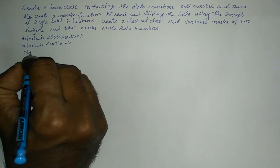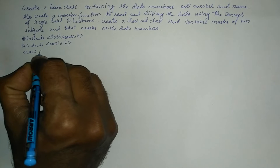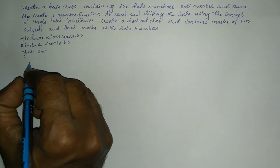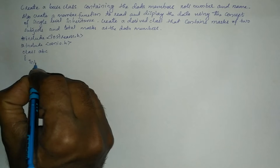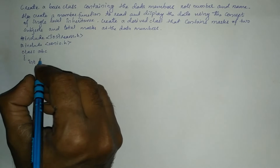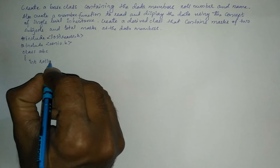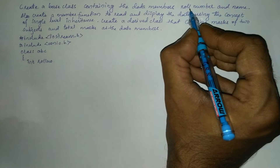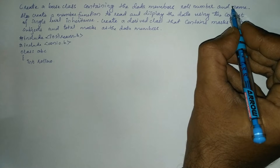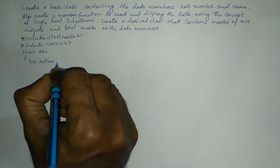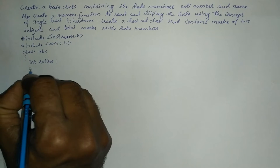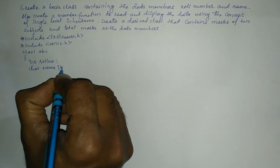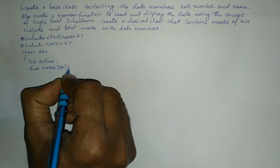Now we are going to define a class called ABC. Inside the curly braces I am going to declare all the necessary variables like int roll number, as it is given in the question roll number and name. Now I am going to write char name array of size 20.